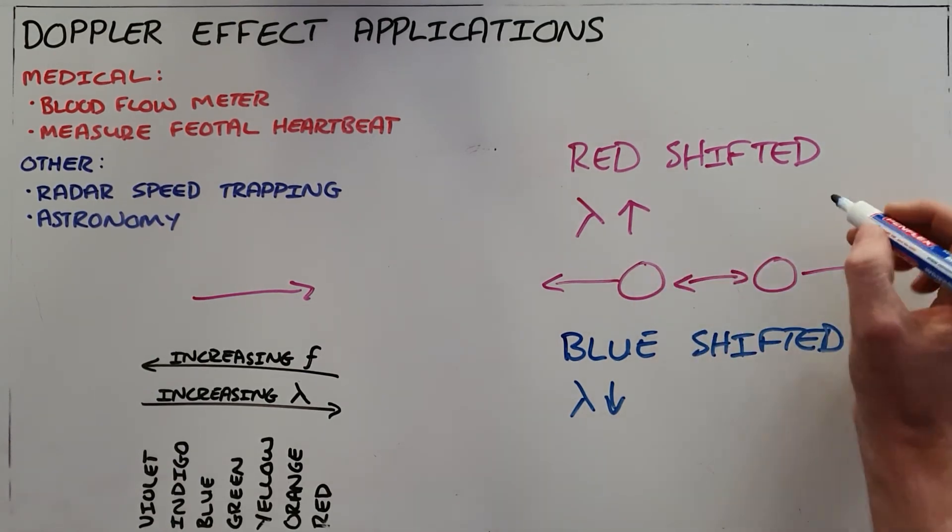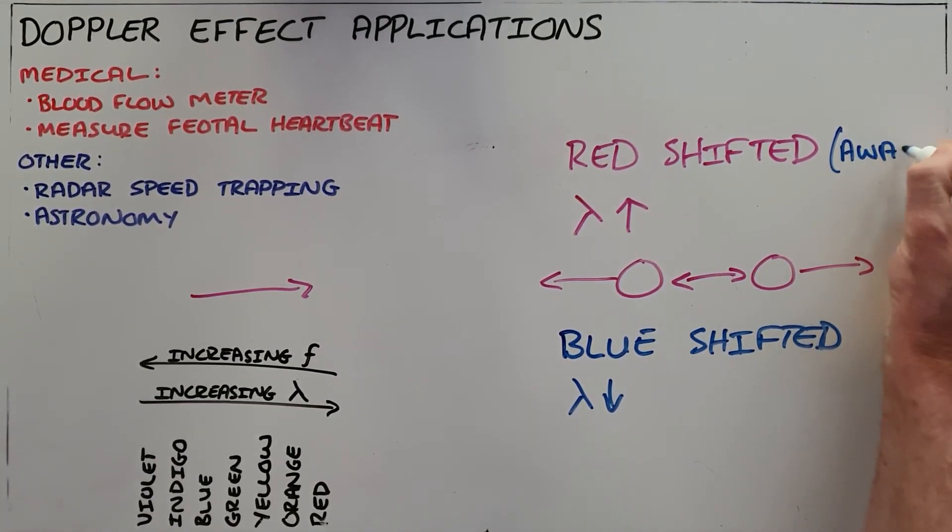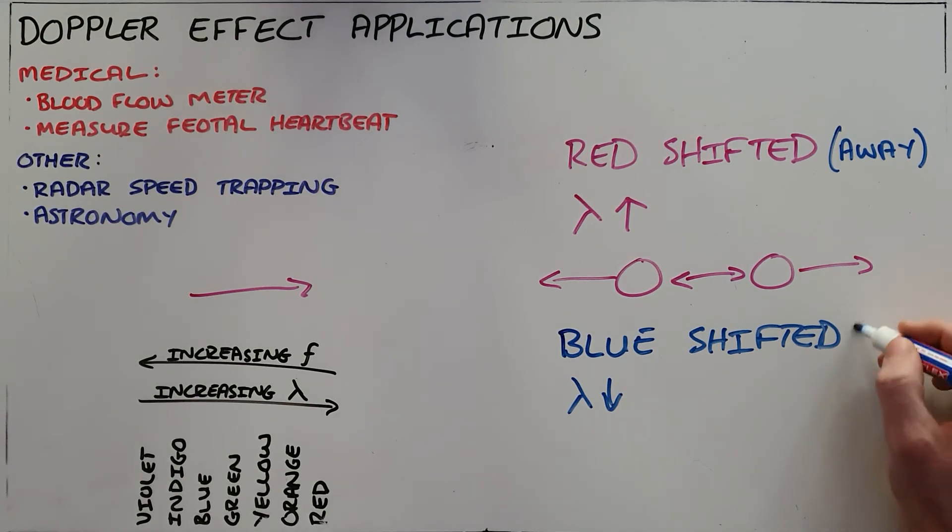So we use the red shift to know that two objects are moving away from each other or apart from each other and blue shift to know that objects are moving toward each other.